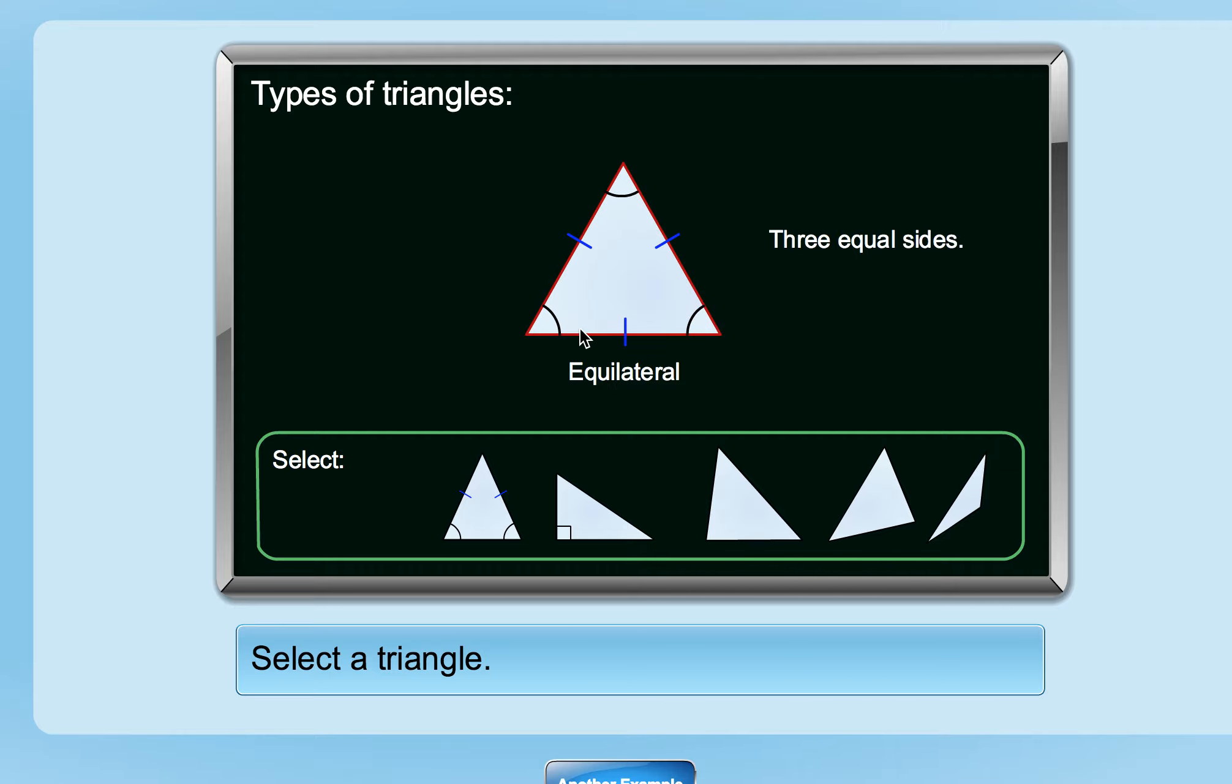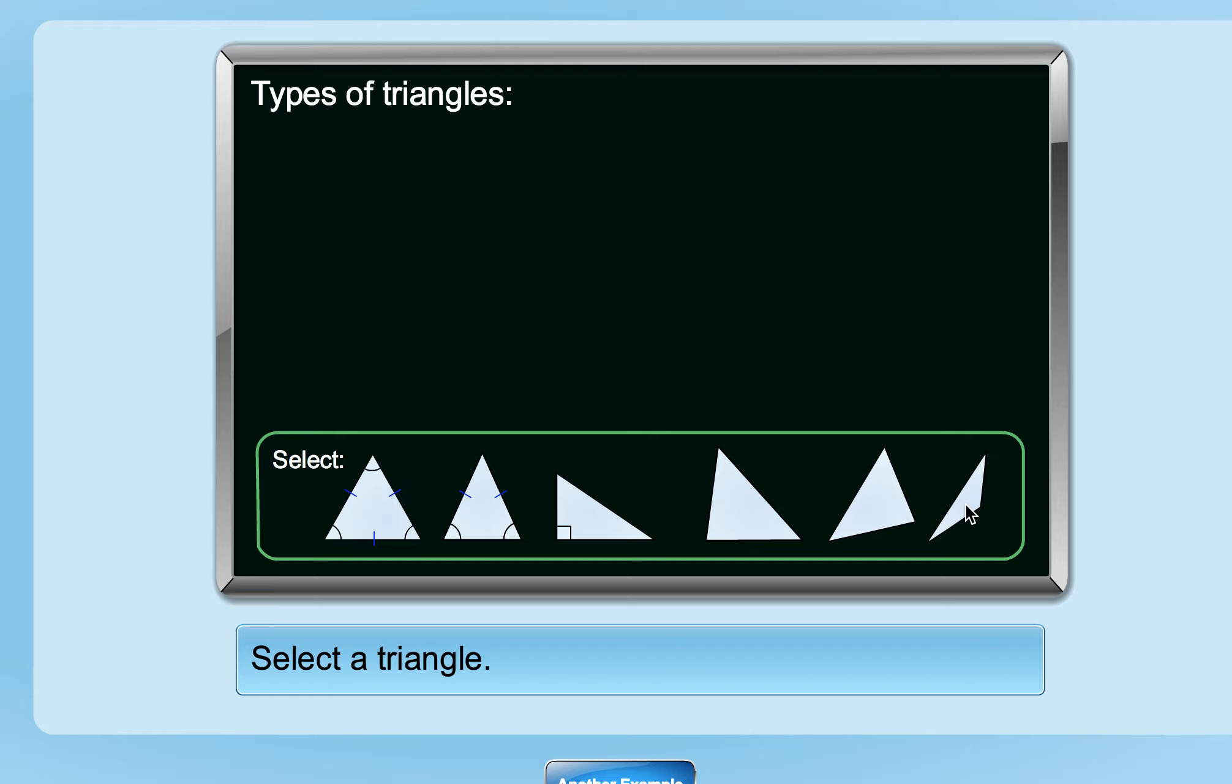It just goes through them, so you can see that's an equilateral triangle with three equal sides, and this really flat skinny one is the obtuse triangle.